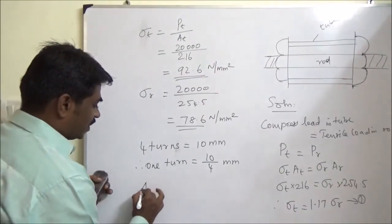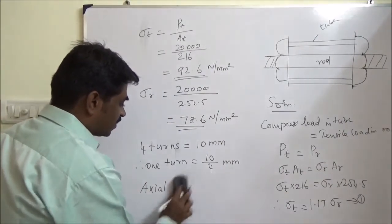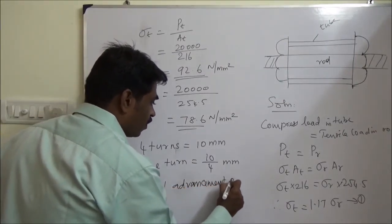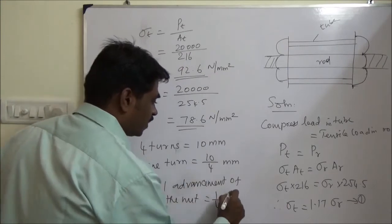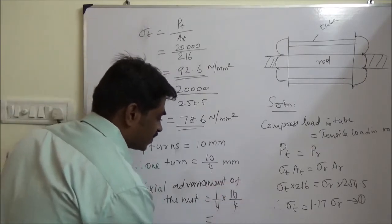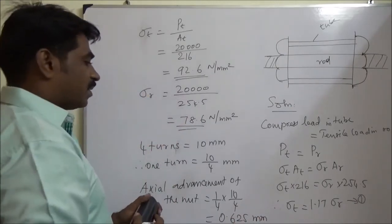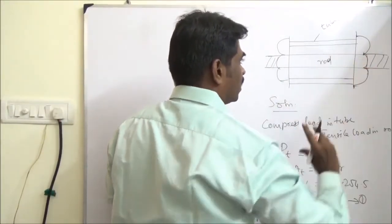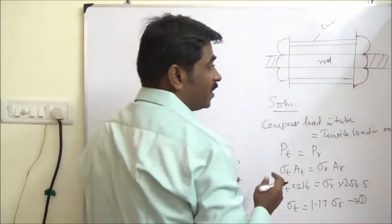So axial advancement of the nut, one-fourth of one turn. So 10 by 4 mm, totally, it is divided. 10 by 16 is 0.625 mm. Now, when it is rotating one-fourth of one turn, it is going to move 0.625 mm. What will happen during that time?